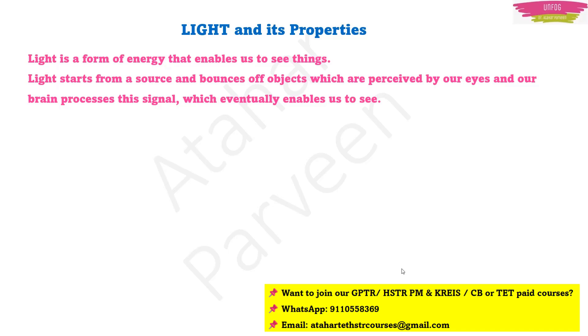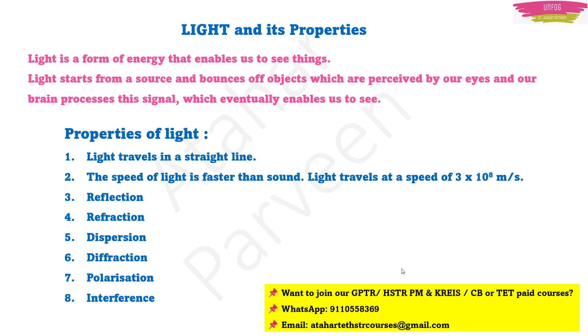Light has a few well-known properties. The first is that light travels in a straight line. This is also known as the rectilinear property of light.